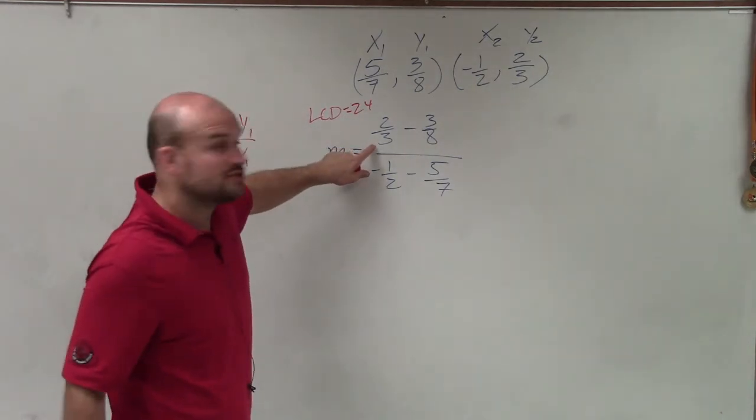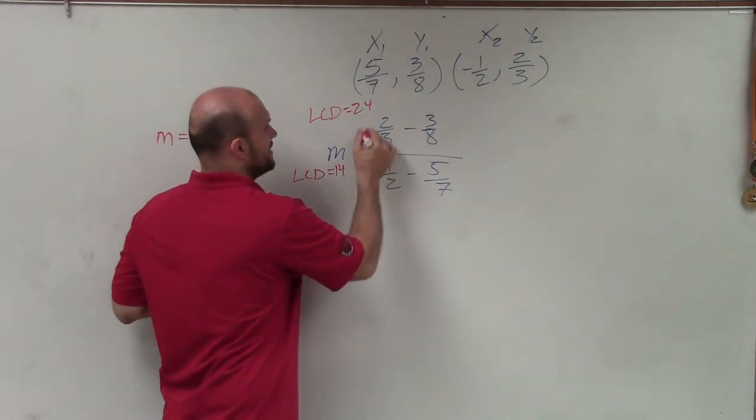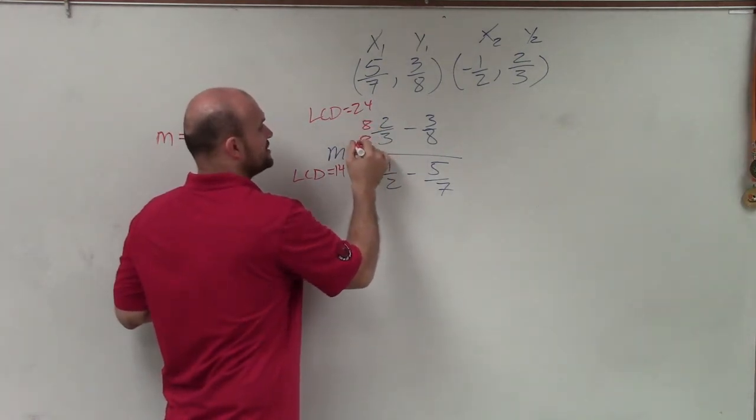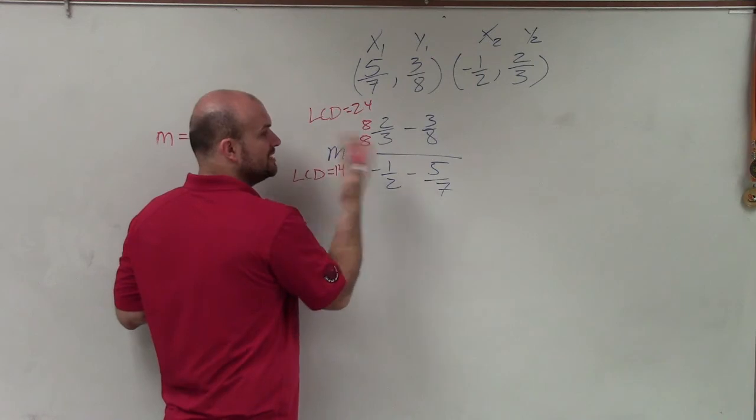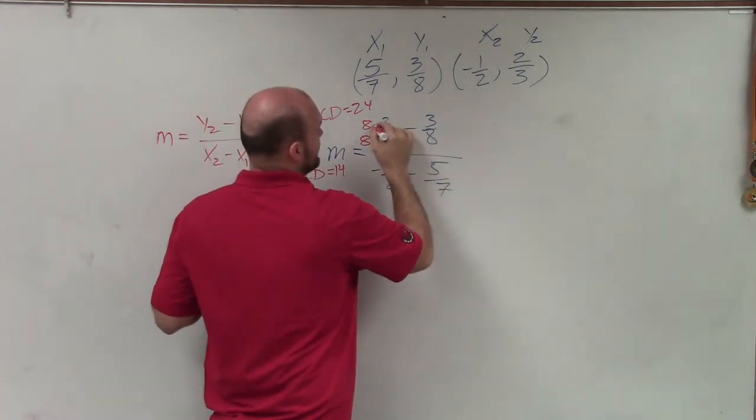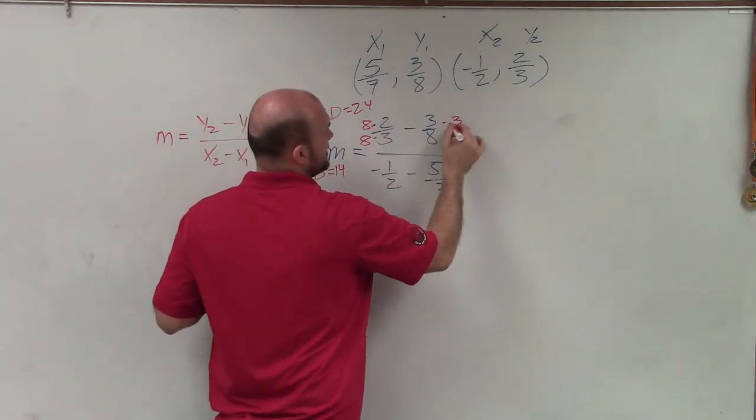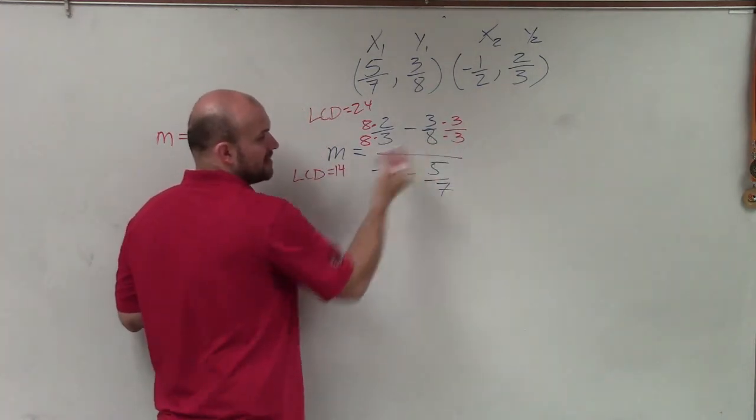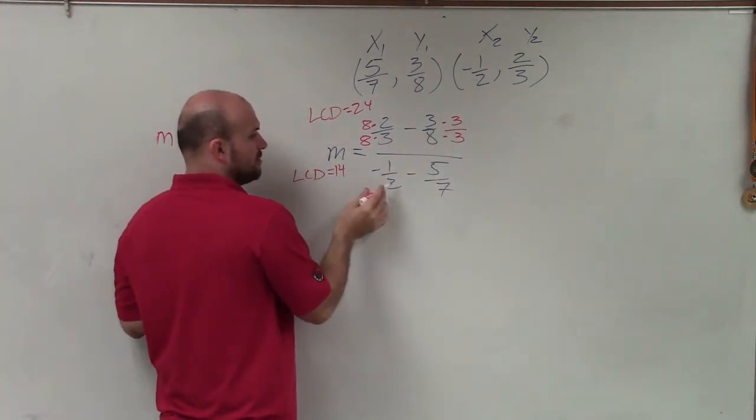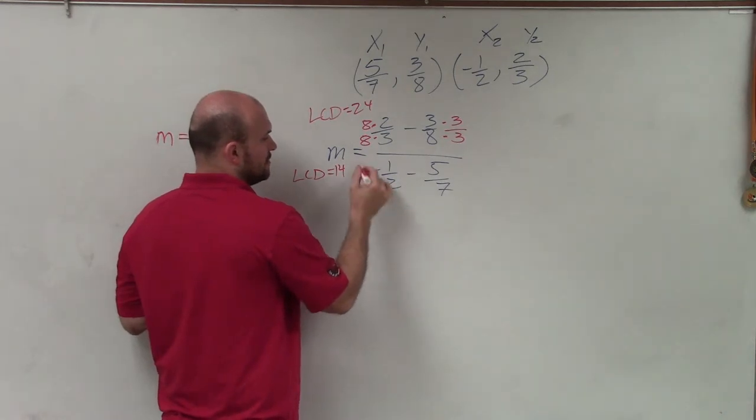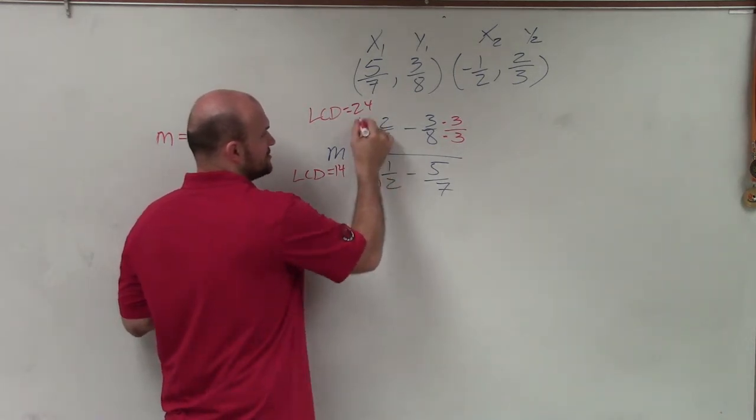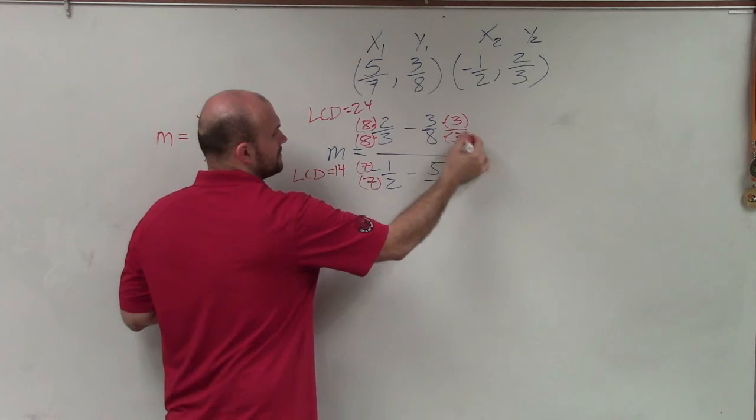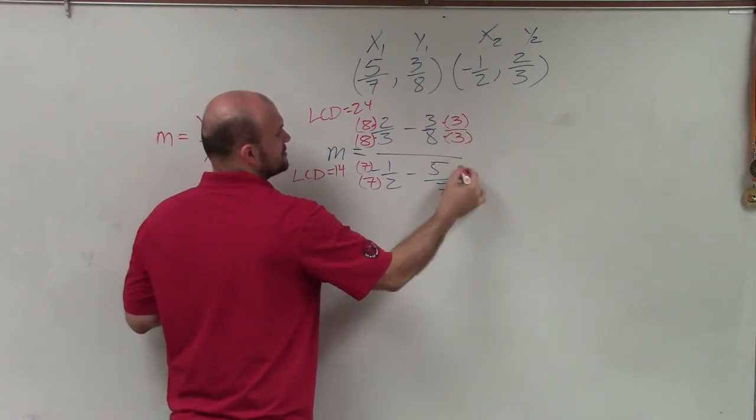Therefore, to get 3 to be 24, I need to multiply by 8. But whatever I do in my denominator, I have to make sure I multiply in my numerator to keep equivalent fractions. Then over here, I'll need to multiply by 3 over 3, as that's going to make my denominator here 24. To get 14, I need to multiply by 7 on the top and bottom. I guess I can use parentheses here. That would probably be easier. And then over here, I have to multiply by 2 over 2.